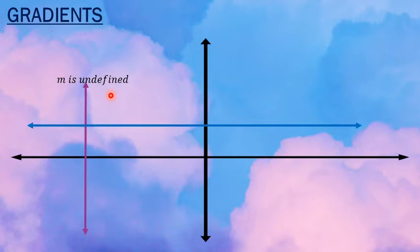What about a horizontal line? Can you walk on a horizontal, flat, lovely road with absolutely zero incline? Yes, you could. Hence, the gradient of a horizontal line is zero. M equals zero.